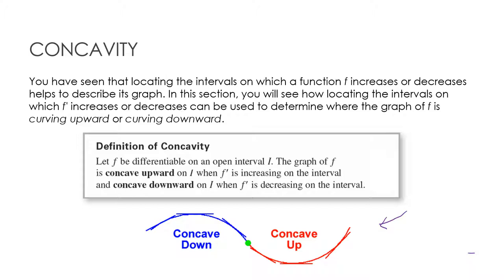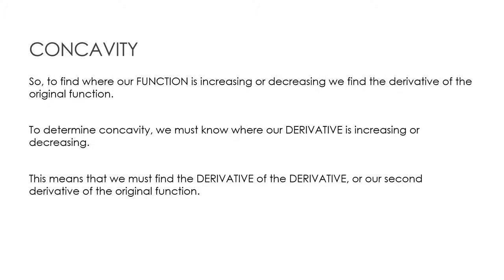Just keep in mind the difference between concave up and concave down. Obviously, concave down is curving downward. Concave up makes a cup. So again, to find where our function was increasing, we found the derivative to determine concavity or where the derivative is increasing or decreasing. We need to find our second derivative.